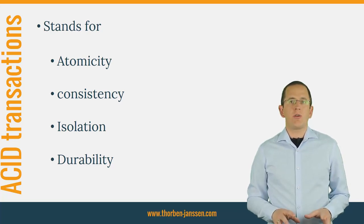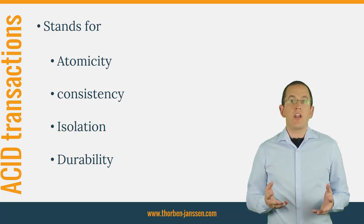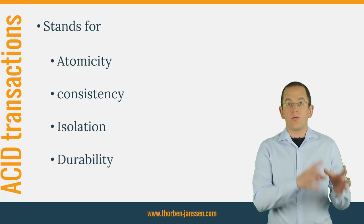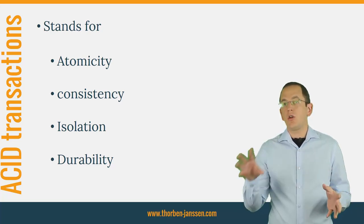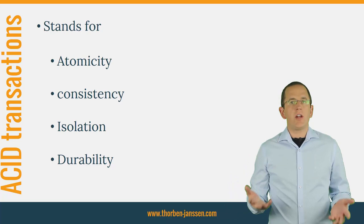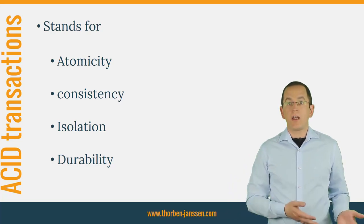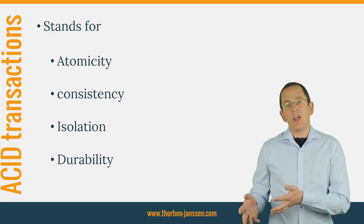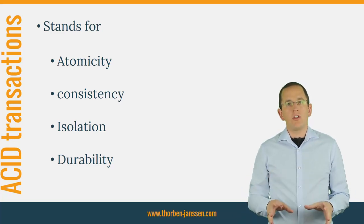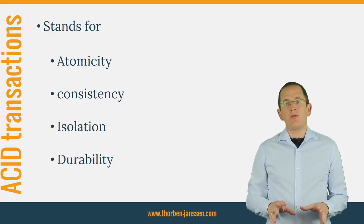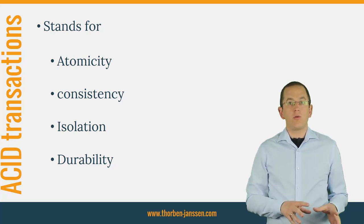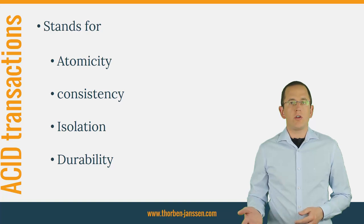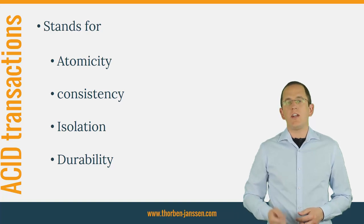The Consistency characteristic ensures that your transaction takes the system from one consistent state to another consistent state. That means that either all operations were rolled back and the data was set back to the state you started with, or the changed data passed all consistency checks. In a relational database, that means that the modified data needs to pass all constraint checks, like foreign key or unique constraints, defined in your database.